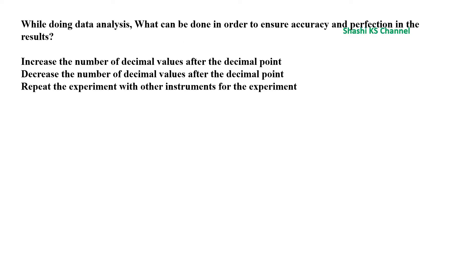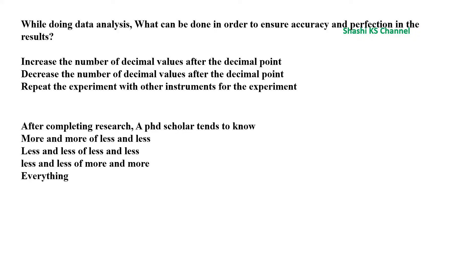Question 5: While doing data analysis, what can be done to ensure accuracy and perfection in the results? The options given were: increase the number of decimal values after the decimal point, decrease the number of decimal values after the decimal point, or repeat the experiment with other instruments.